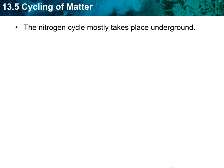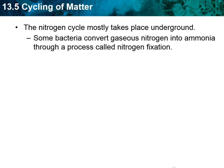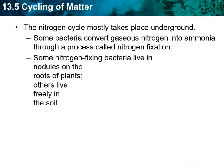The nitrogen cycle is different from the other cycles in that it takes place underground. Plants can't just take nitrogen from the atmosphere - they need bacteria in the soil to convert atmospheric nitrogen into ammonia, which plants are then able to use. That process is called nitrogen fixation. At the end, bacteria also perform denitrification, putting nitrogen back into the atmosphere. Some nitrogen-fixing bacteria live on nodules on plant roots, while others are free-living in the soil.